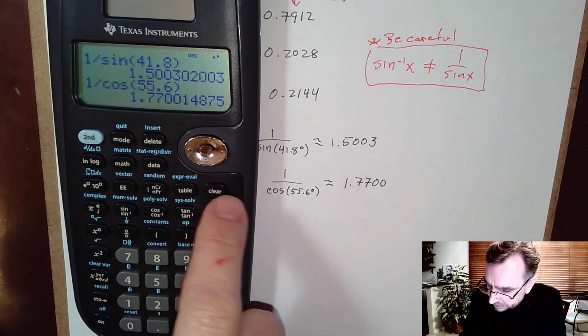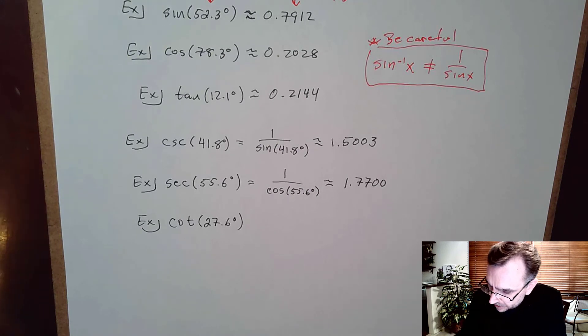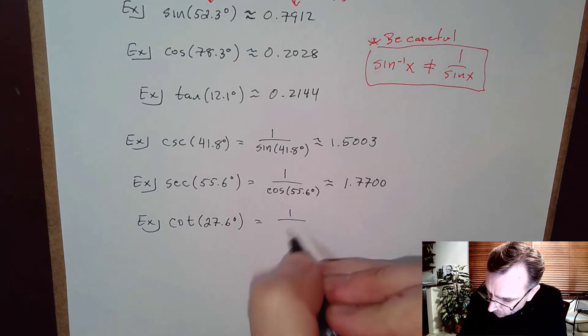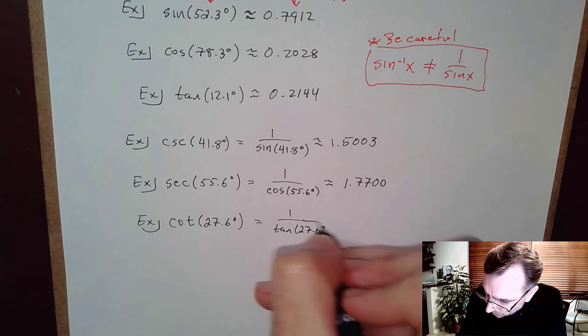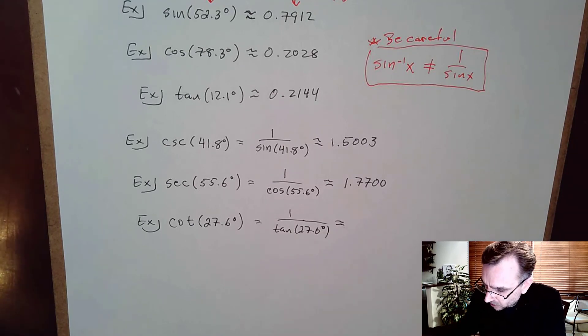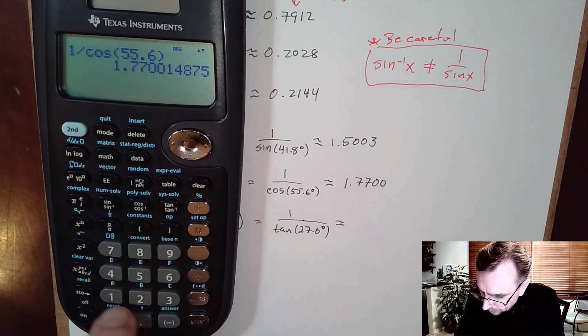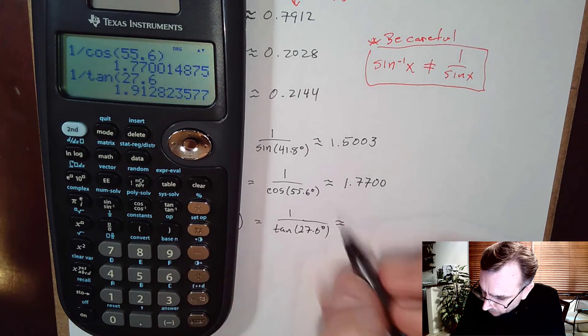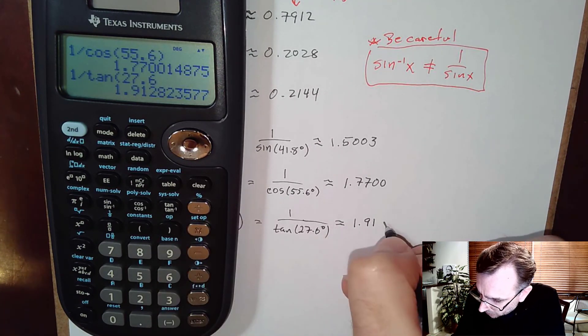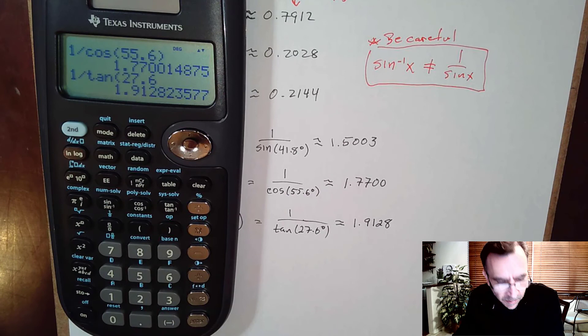Lastly, for cotangent we're going to look at 1 over tangent of 27.6°. That'll approximately be equal to - let me see - tangent of 27.6°, I'm getting 1.9128 rounded off properly.